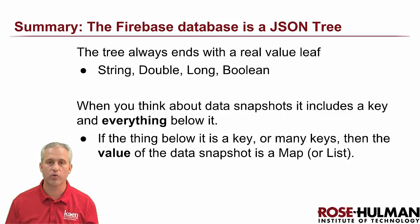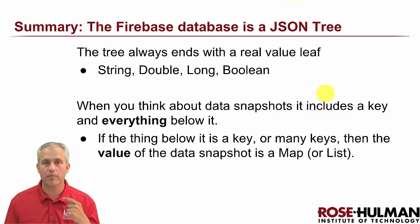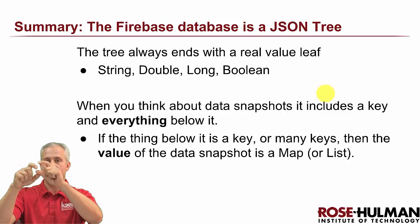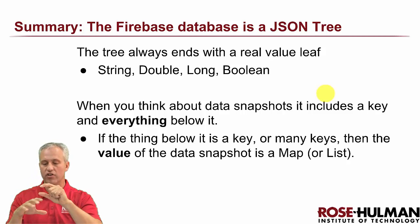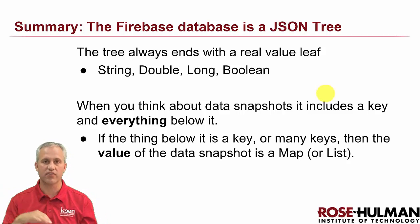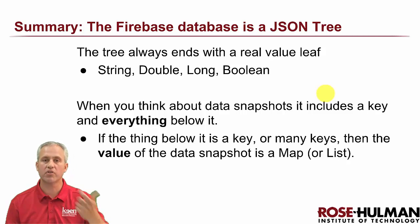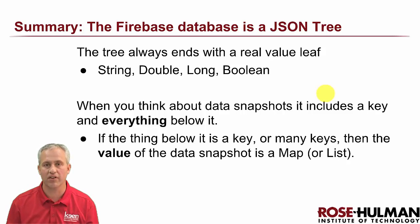Takeaway messages: the Firebase database is a JSON tree. Trees always end with a leaf real value — a string, double, long, or boolean. When you think about data snapshots and retrieving things, you're asking for a key and everything downstream. If downstream is a primitive you get that value; if it's one or more keys you get a map or list. Hopefully this gives you a better concept as you start doing more with Firebase database. See you next time!